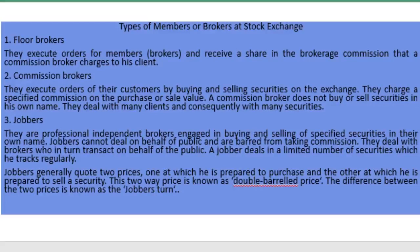A jobber deals in a limited number of securities which he tracks regularly. They cannot deal directly with the public; they deal with the commission broker who deals with the public. Jobbers generally quote two prices — one at which they are prepared to purchase and the other at which they are prepared to sell a security. This two-way price is known as the double quotation price, and the difference between the two prices is known as the jobber's spread.